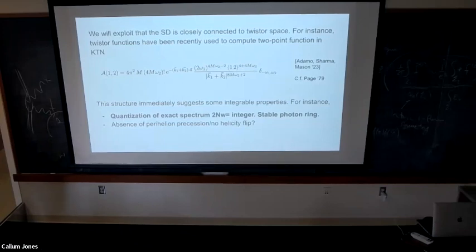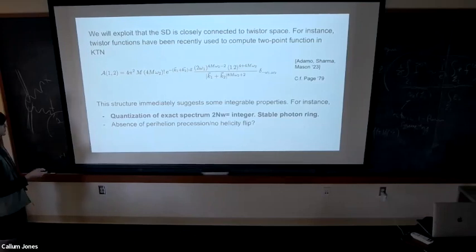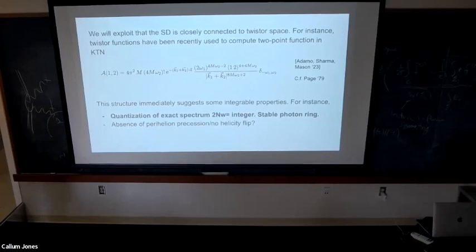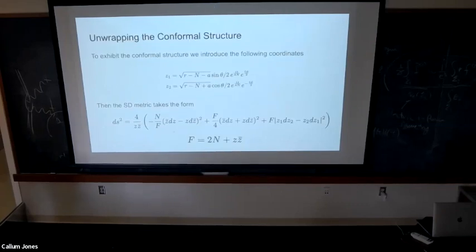Another cool conjecture from this amplitude is the absence of perihelion precession. From a well-known story, perihelion precession is absent in integrable theories such as the Kepler problem. In this case it can be traced back to the existence of plus-plus but not plus-minus helicity amplitudes — the fact that there's no helicity flip resonates with the expectation of no perihelion precession, which is again related to the existence of a Laplace-Runge-Lenz vector.